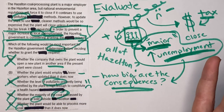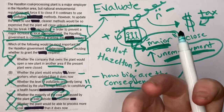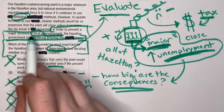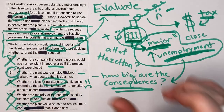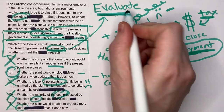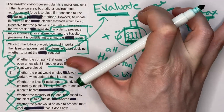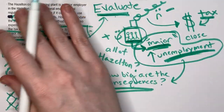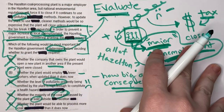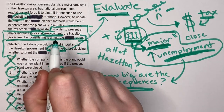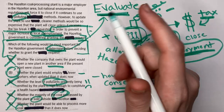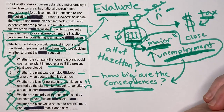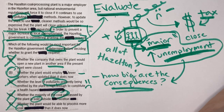The only answer choice that correctly helps us evaluate whether the government should grant the request and addresses unemployment is B — so B is our correct answer. The key takeaway for evaluate questions: you are really only evaluating the conclusion sentence. That doesn't mean skip the premises, but you need to focus on the conclusion. Evaluate questions are like a cousin to assumption questions.